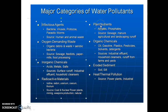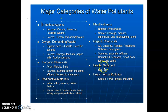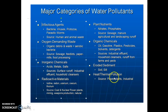Plant nutrients such as nitrates and phosphates pollute water. Organic chemicals also cause water pollution. Eroded sediments like soil and silt pollute water. Heat or thermal pollution occurs when power plants or industries discharge hot water, disrupting the temperature balance of water bodies.